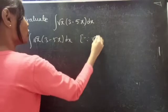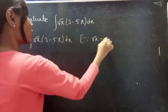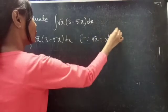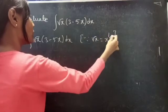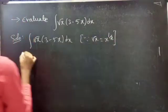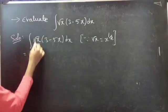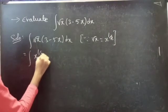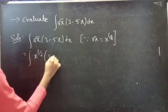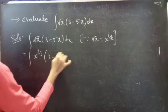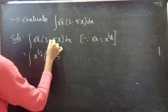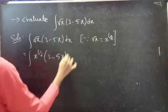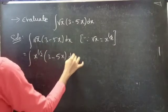So, square root of x equals to x to the power 1 by 2. We can replace square root of x by x to the power 1 by 2, into 3 minus 5x, dx.